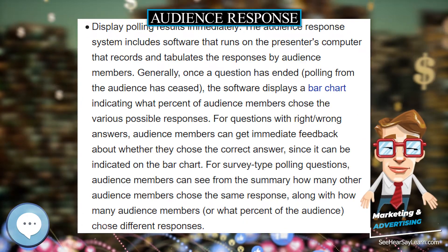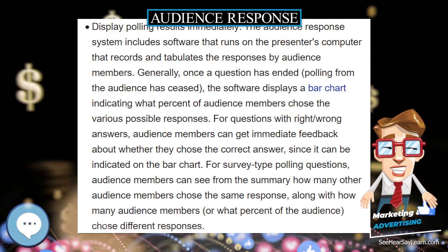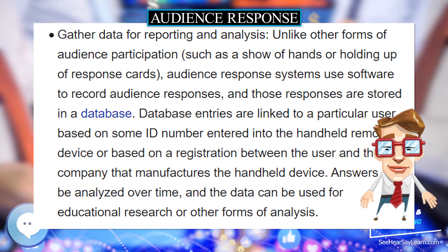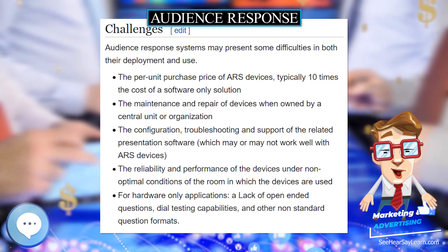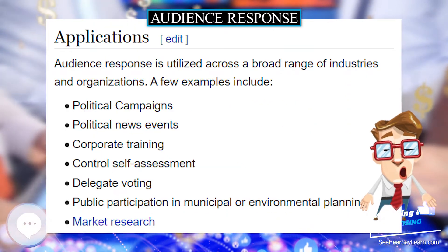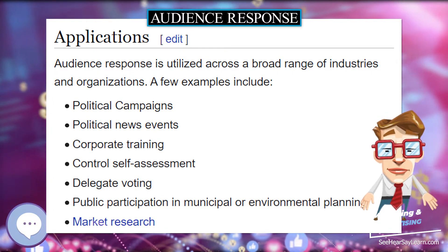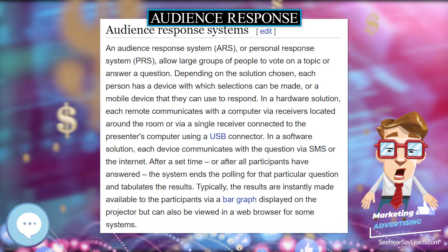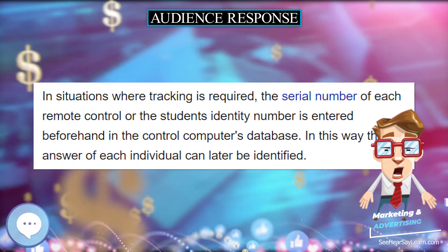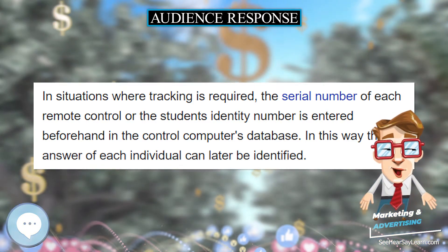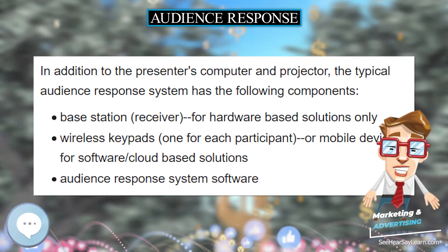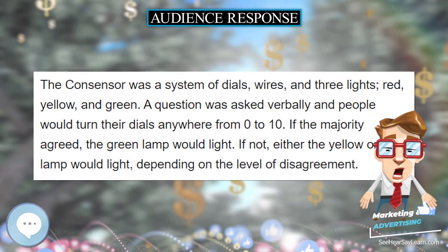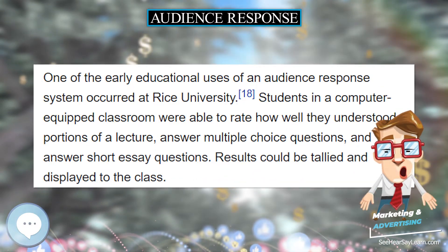Soon after retiring, Simmons formed a startup company with Gordon called Applied Futures Incorporated to develop and market the system, which they called the Consensor. Applied Futures was one of the first audience response companies. In 1972, while Gordon and his assistant Harold S. (Hal) Becker were still working on development, Applied Futures filed for a patent — U.S. Patent 3,766,541 — which was granted in 1973 with Gordon and Becker as inventors. Another patent filed in 1974 and granted in 1976 — U.S. Patent 3,947,669 — lists Simmons and James Marquis. Sales began in 1974. The Consensor was a system of dials, wires, and three lights: red, yellow, and green.